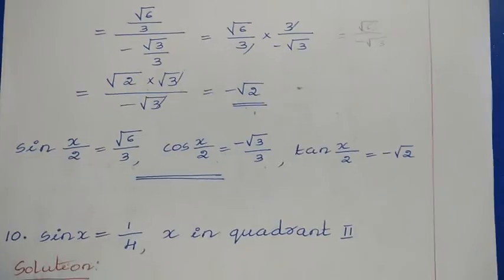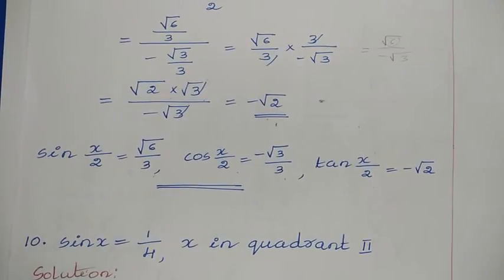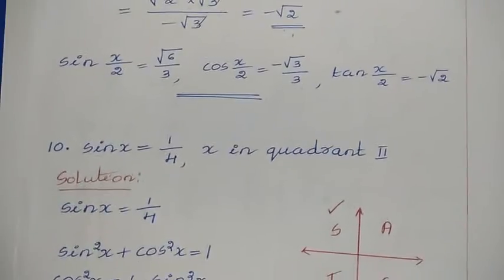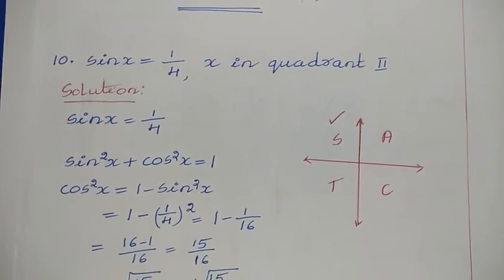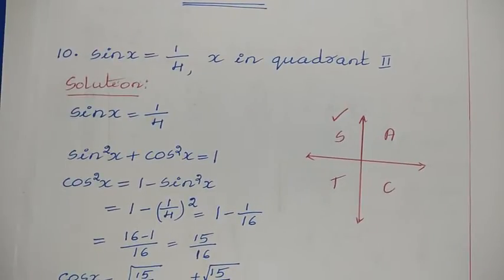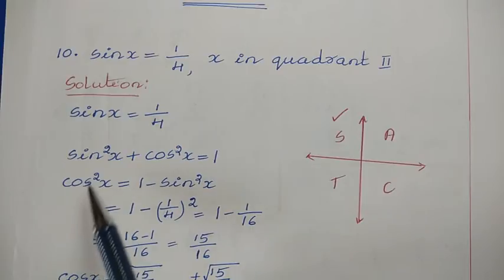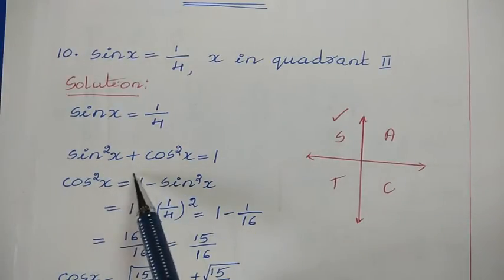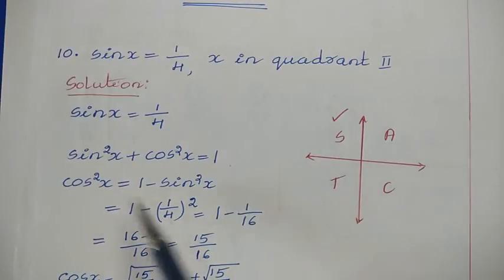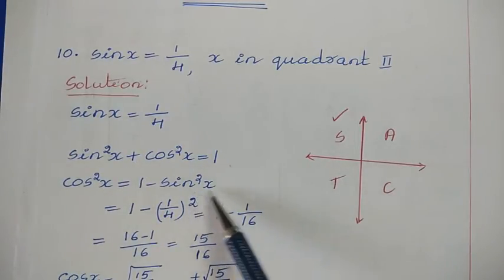The final problem: sin x = 1/4, x in quadrant second. The formula requires cos x, but only sin x is given. Using the Pythagorean identity sin²x + cos²x = 1: cos²x = 1 − sin²x = 1 − (1/4)² = 1 − 1/16.